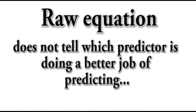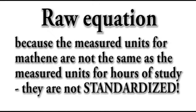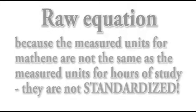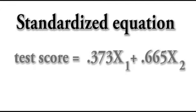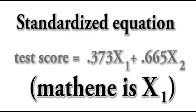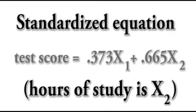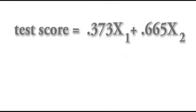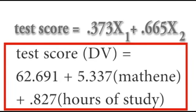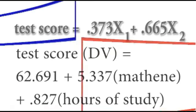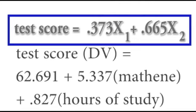But that raw equation isn't really all that helpful to us, because we want to be able to know which of our predictors predicts more, which one's stronger, and so forth. So if you go to your beta column under the standardized coefficients, you can write your standardized regression equation from there. It will follow as test score is equal to 0.373 mathene plus 0.665 hours of study. Remember that mathene, which is our first variable, is x sub 1, and hours of study, which is our second variable, is x sub 2. So when you compare the standardized regression equation to the raw regression equation, you can see the differences. With the raw regression equation, you can't really get a sense of whether mathene or hours of study is a stronger predictor. But with a standardized equation, you can see that hours of study is a much stronger predictor of test scores than mathene, because 0.665 is bigger than 0.373.